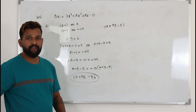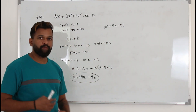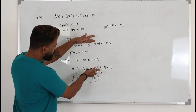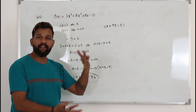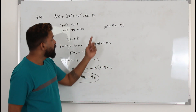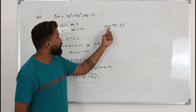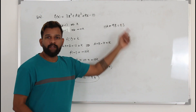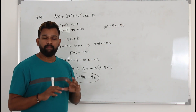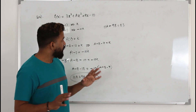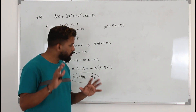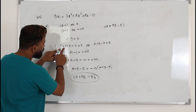One student asked: can I just solve the two simultaneous equations to find a and b, then plug in the values to prove the equation equals 83? The answer is: you are allowed to do that, but there's a problem when you try to solve these two simultaneous equations.